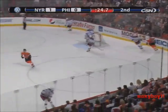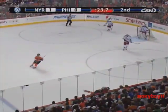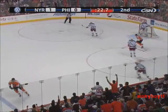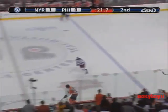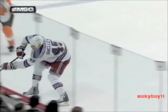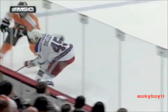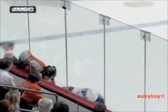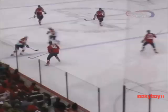Here is an example of a legal shoulder check to the head, where the player skating north-south with the puck has to be aware of where he is and who is on the ice. Pronger steps up. He's down. He doesn't jump.